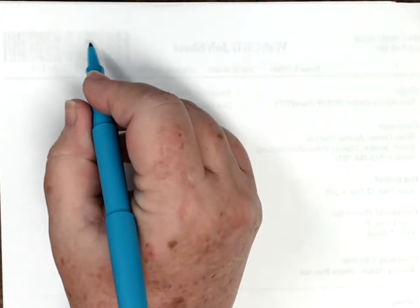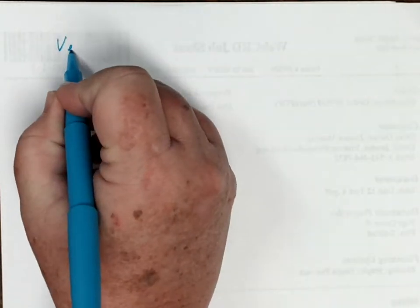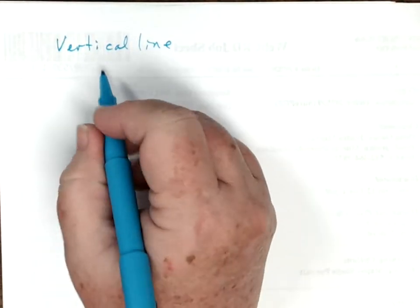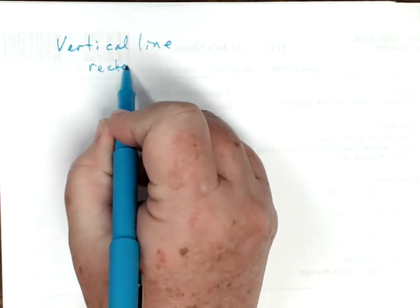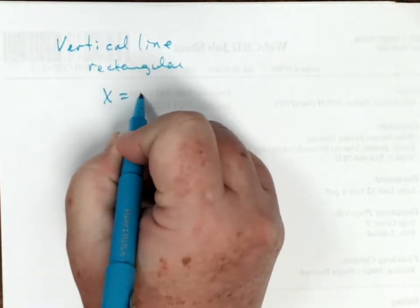This video is about all of our lines - vertical, horizontal, and oblique. We're going to start off with the equation of a line that's a vertical line in rectangular coordinates. So in rectangular coordinates, if I wanted to draw a vertical line, I would have x equals a.